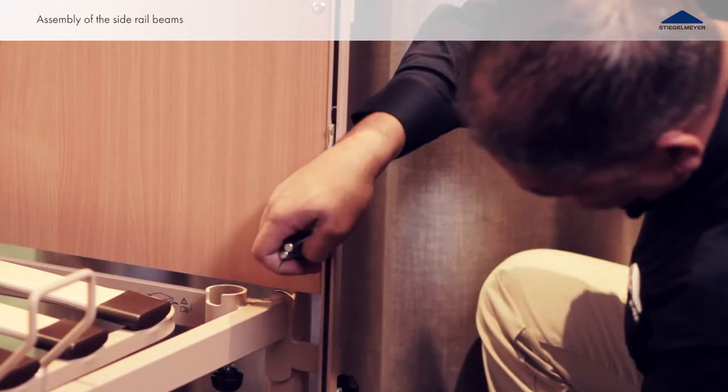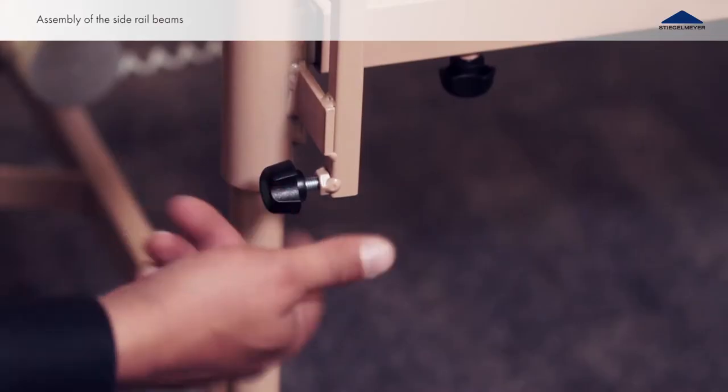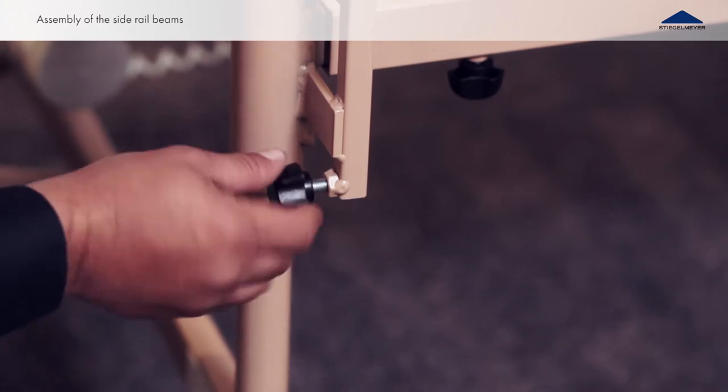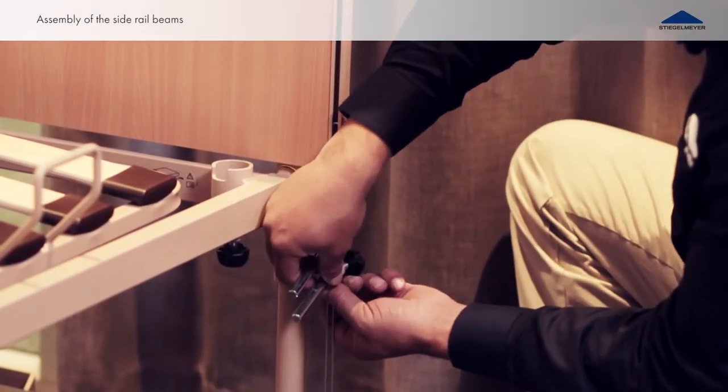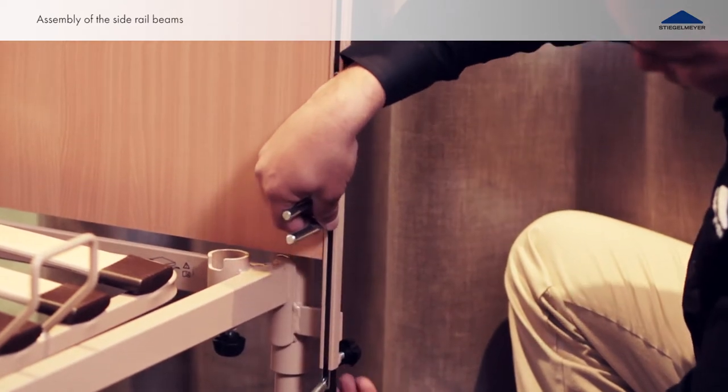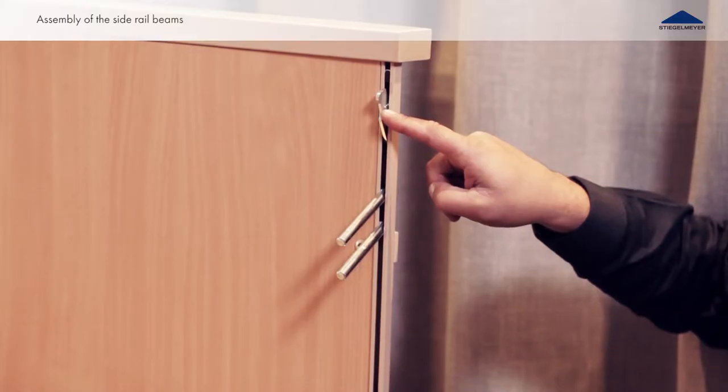Begin at the head side end board. Loosen the knurled screw on the bottom end of the guide track and insert the plastic slide from below. The release lever must be pointing up.